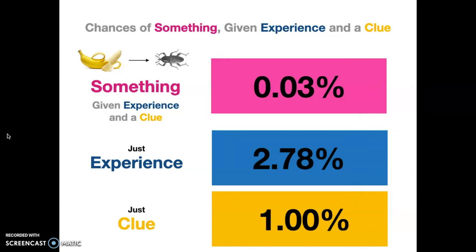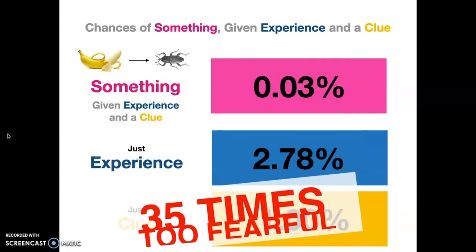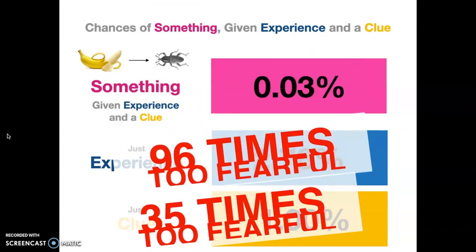So what do we see here? We see that our actual Bayesian degree of belief, something given an experience and a clue showed us that it was about 0.03% chance, a very, very small percent chance that there's going to be a bug in that banana. Whereas just experience said there's a 3% chance getting kind of risky and even the 1% compared to that rule above. So we found that using just the clue is 35 times way too fearful. And using just experience is about 96 times way too fearful. That might not mean as much if you're just talking about one banana. But if you're talking about many, many, many bananas, it starts to add up.